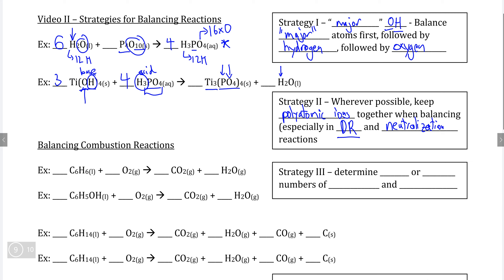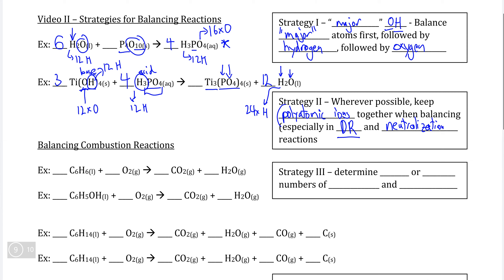For example, three times four gives titanium hydroxide 12 oxygens. Since oxygen appears in only this one location in the products, a coefficient of 12 balances oxygen. Checking hydrogen: 12 times two is 24. We have four times three equals 12 hydrogen in the acid and four times three equals 12 in the base, totaling 24. By treating polyatomic ions as units and applying the major hydroxide strategy, the reaction is not as difficult to balance as it may seem.